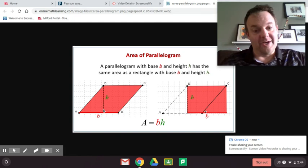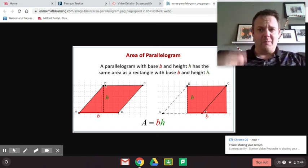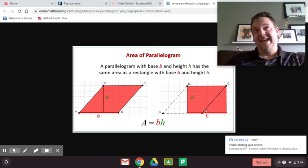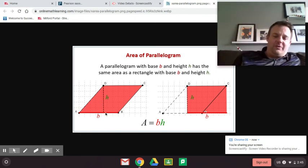Now the height, very important, is perpendicular to the base. So we would never say this diagonal here is the height. We don't measure ourselves and say from here to the floor down there, I'm seven and a half feet tall. You'd measure straight up and down to the floor, perpendicular to the floor, if you will.